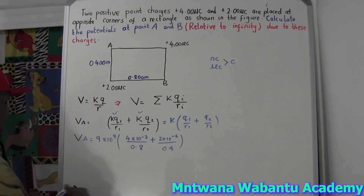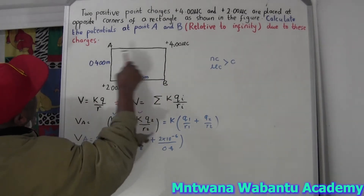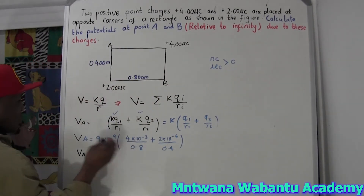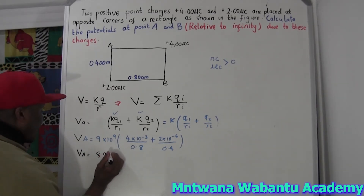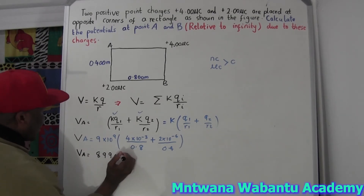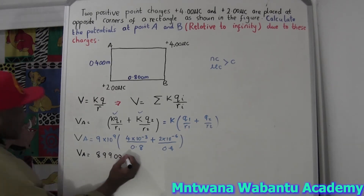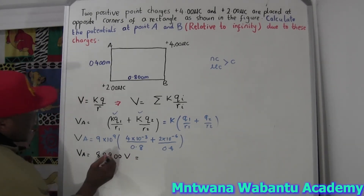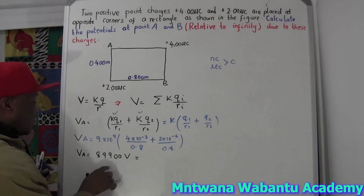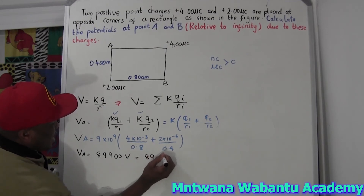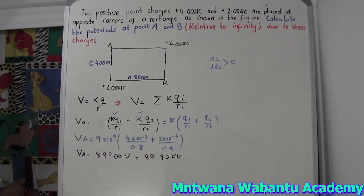So V_A — the electric potential — if you plug that into the calculator, it gives 18,900 volts. Since this is more than 1000, you can divide by 1000 to get it in kilovolts: V_A equals 89.90 kilovolts.